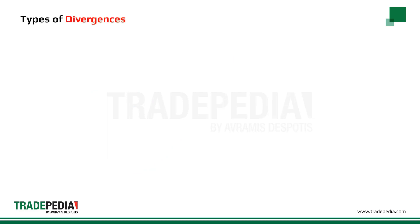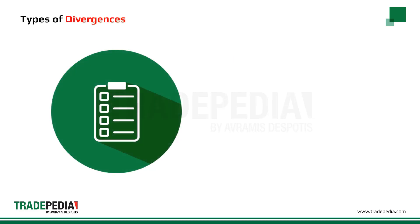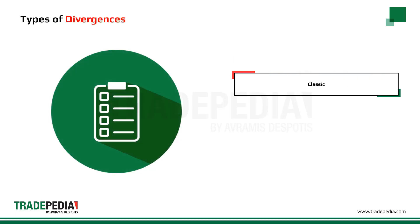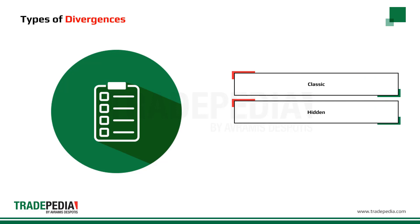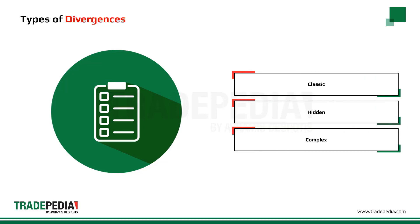There are three types of divergences: the classic divergence, the hidden divergence, and the complex divergence.